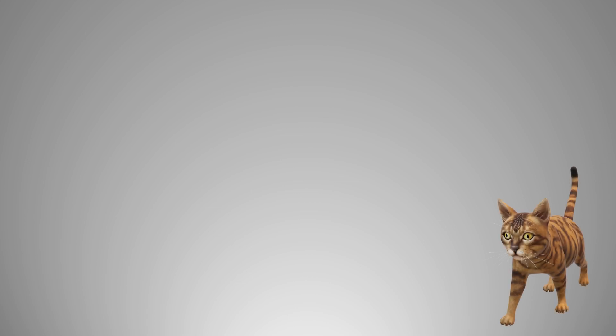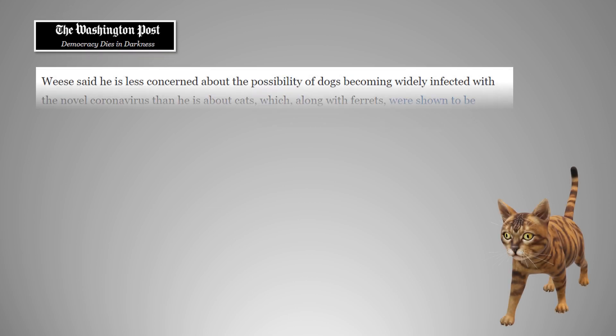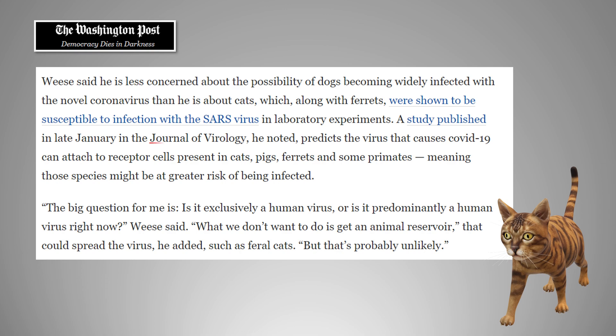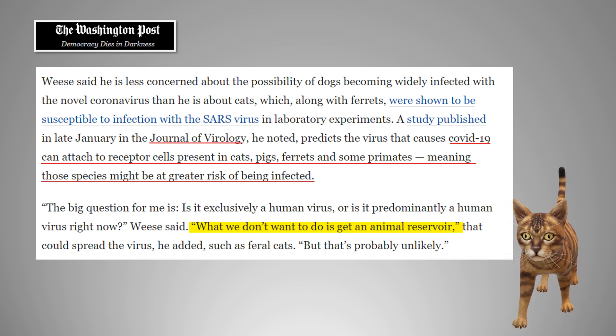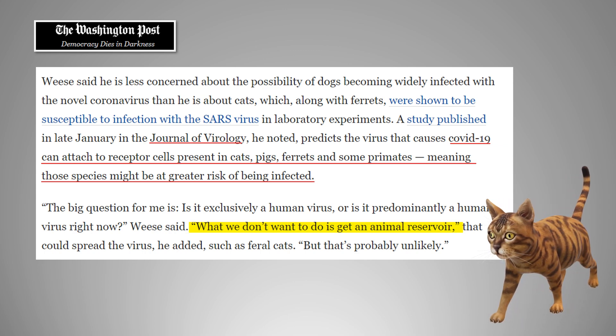The Washington Post has recently reported that one of the latest research papers published in Journal of Virology noted that coronaviruses have the ability to attach to receptor cells present in cats and some other animals, which simply means that those species have the potential to contract and transmit the disease. Obviously, what scientists don't want is an animal reservoir, especially one of the ones who are widely being kept as pets at home.